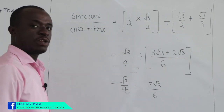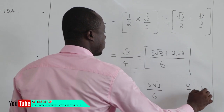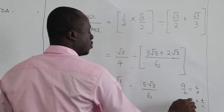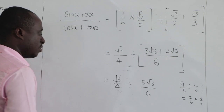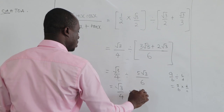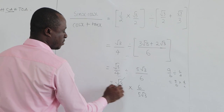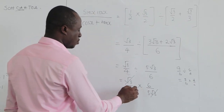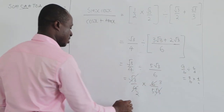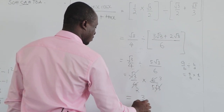From the idea of dividing fractions — A over B divided by C over D equals A over B times D over C — we have root 3 over 4 times 6 over 5 root 3. The root 3 cancels, 2 goes into 4 twice and into 6 three times. So we get 3 all over 2 times 5, which is 3 over 10.